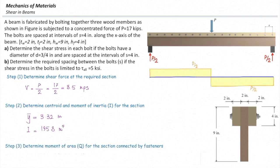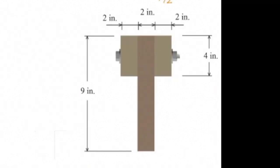Now we need to determine the first moment of area Q. For determining Q, we need to answer: what part of the section is connected by the bolt to the rest of the section? This shape has three subsections. I can consider the two parts on the sides as connected to the middle part by the bolts. To keep it consistent with the procedure from Lecture 17, I will consider just one part — the right part. So Q will be calculated for that part.